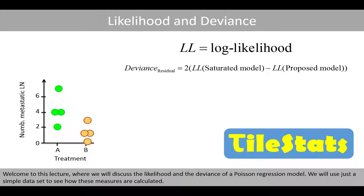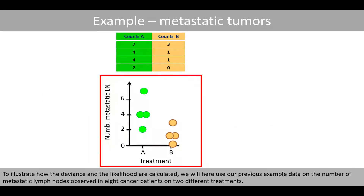Welcome to this lecture where we will discuss the likelihood and the deviance of a Poisson regression model. We will use a simple dataset to see how these measures are calculated. To illustrate how the deviance and the likelihood are calculated, we will use our previous example data on the number of metastatic lymph nodes observed in eight cancer patients on two different treatments.